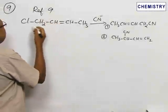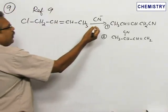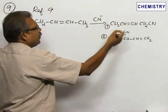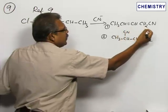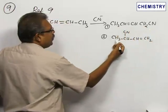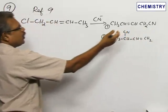Let's refer to problem number nine: Cl-CH2-CH=CH-CH3, and here the nucleophile CN-. So two possible products: CH3-CH=CH-CH2-CN and the second one CH3-CH(CN)-CH=CH2.